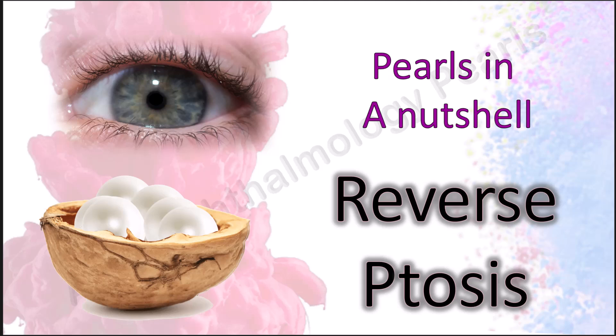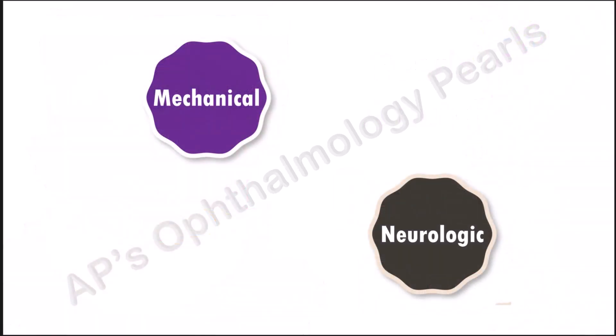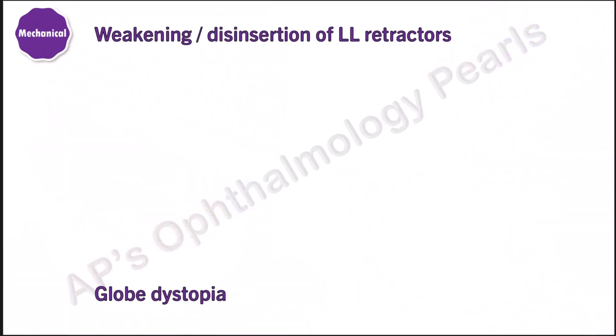Reverse ptosis, also referred to as upside-down ptosis, is elevation of the lower eyelid relative to its normal position at the level of the inferior corneal limbus. Broadly, the causes of reverse ptosis are mechanical and neurologic. The mechanical causes are mainly due to weakening or disinsertion of lower lid retractors, and dystopia — that is, malposition of the globe.